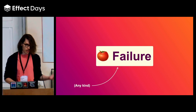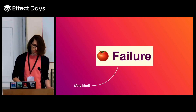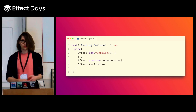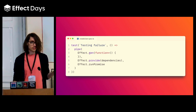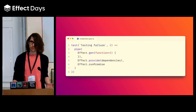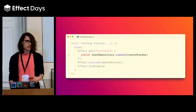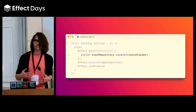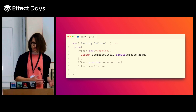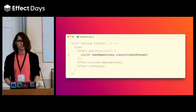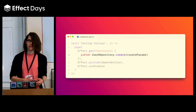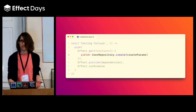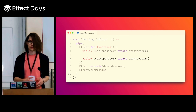Any kind of failure — error, defects, interruption, failure. New test, exact same structure again: gen, provide, run/promise. This test focuses on the create method of our user repository, and we want to test that the creation fails when the user already exists. To trigger this case, we just have to create the same user twice.